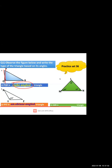Question 2: triangle XYZ. As I told you in the last lecture, if an angle is more than 90 degrees we call it an obtuse angle triangle. In XYZ, angle YZ is 125 degrees, which is more than 90 degrees, so it is an obtuse angle triangle.